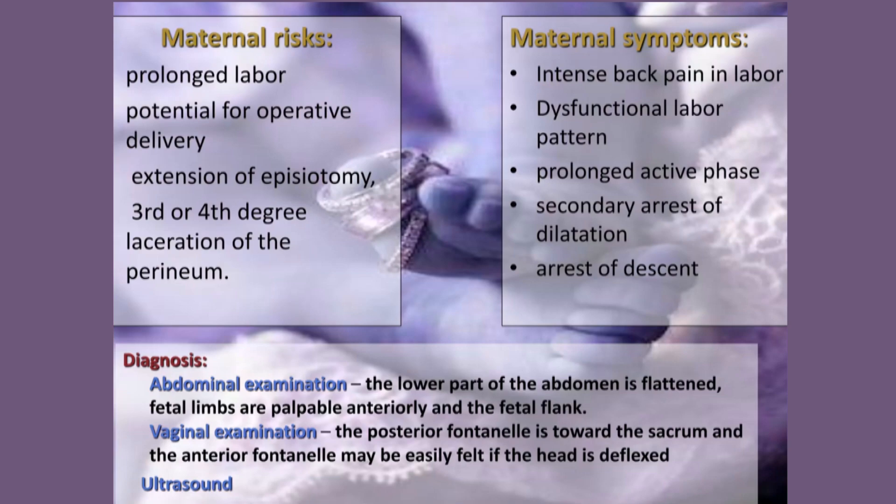The maternal symptoms include intense back pain in labor, dysfunctional labor pattern, prolonged active phase, secondary arrest of dilatation, and arrest of descent. These are the maternal symptoms of occipital posterior position.